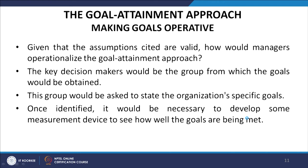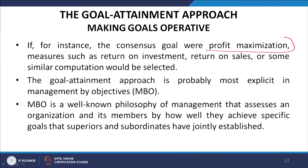How would managers operationalize the goal attainment approach? The key decision makers would be the groups from which the goals would be obtained. This group would be asked to state the organization's specific goals, and once identified, it would be necessary to develop some measurement device to see how well the goals are being met. If the consensus goal were profit maximization, measures such as return on investments or return on sales would be selected.